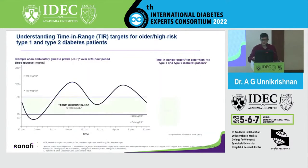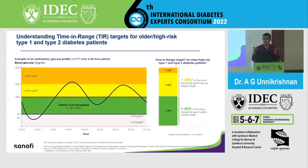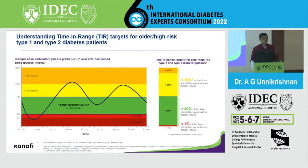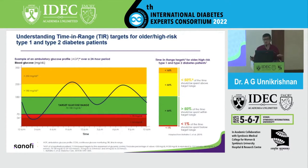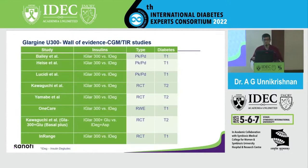For older people, just as we relax HbA1c targets, we also relax the time in range targets to about 50%. So if you see an elderly gentleman or lady, if the blood sugar levels are within the normal range 50% of the time, we say that the time in range is about 50%, and that's acceptable.